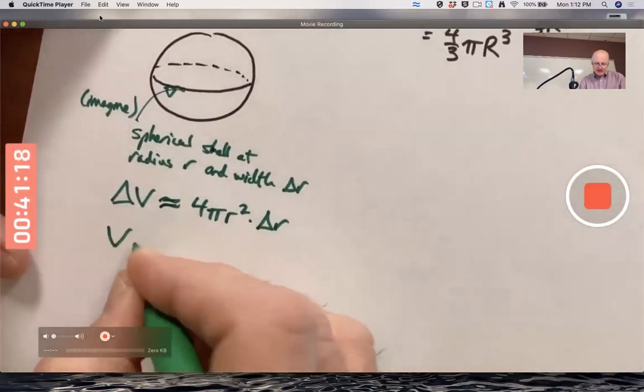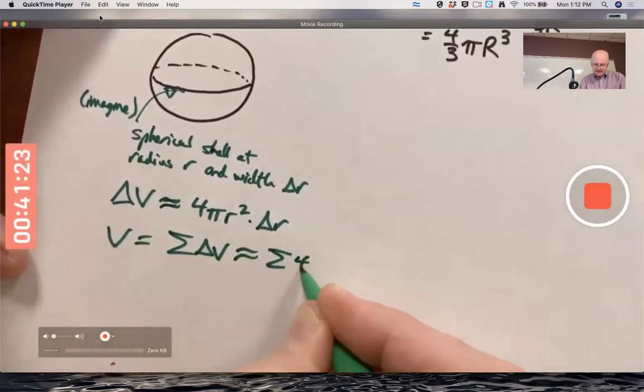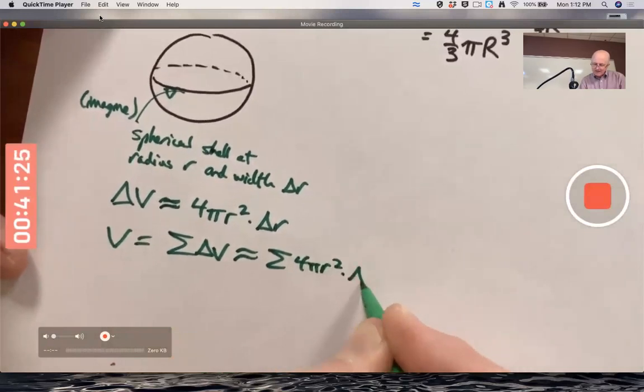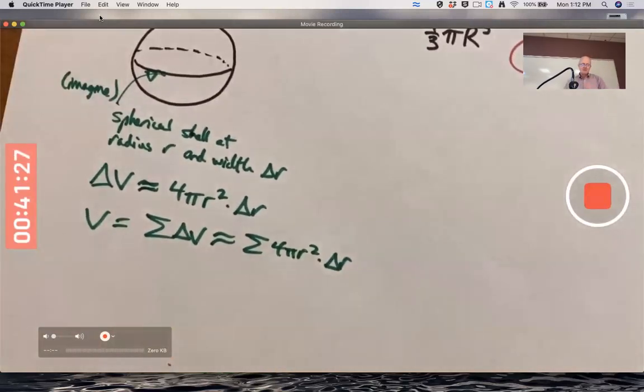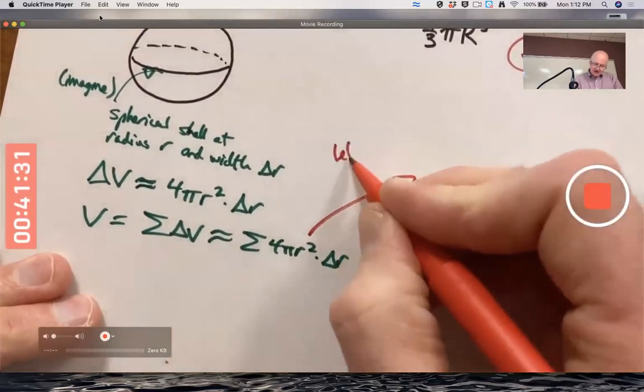And the total volume then would be the sum of the little volumes, which would be approximately sums that look like this, which, hey, once again, are Riemann sums. Let Δr go to zero,